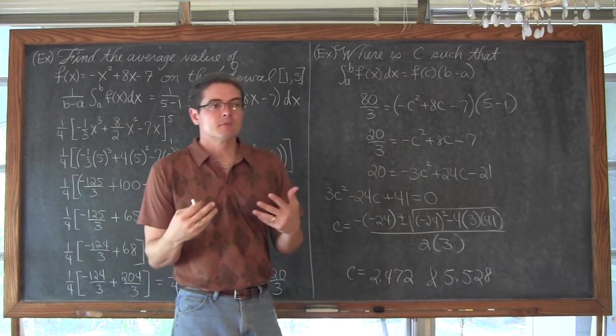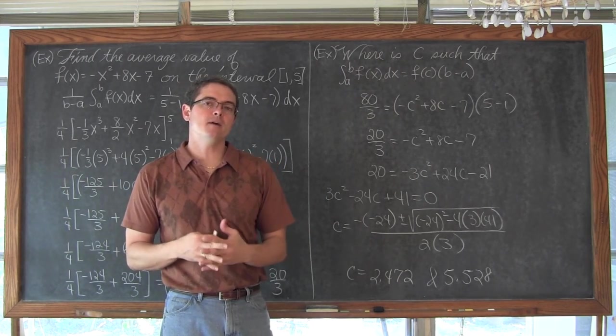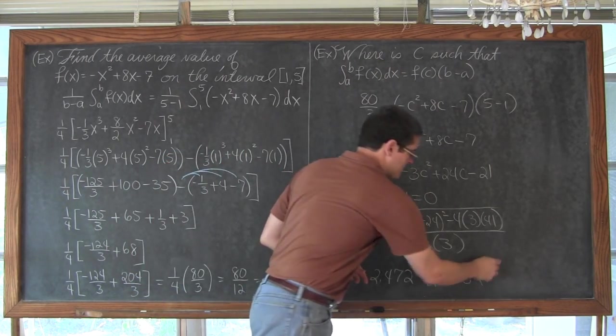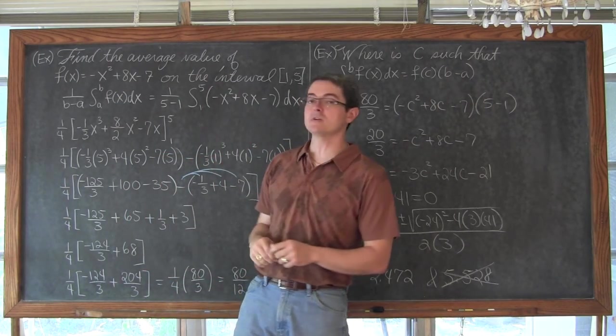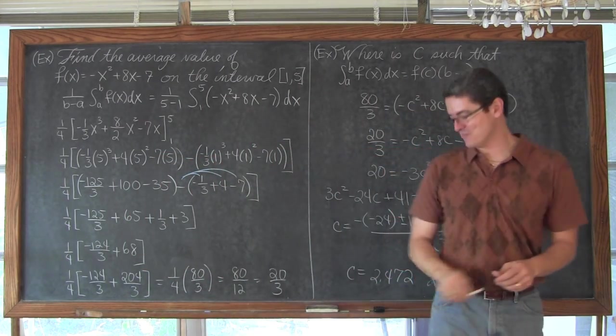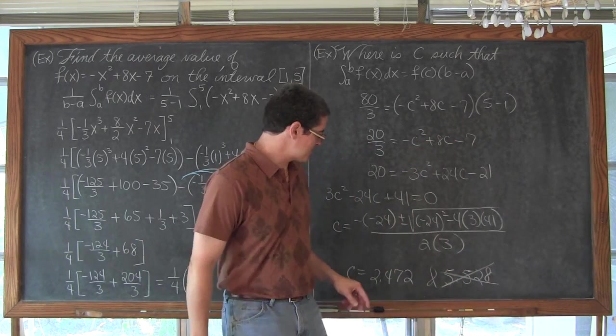So, while it is possible to get two answers, or more than one value of c on that closed interval, my second value of 5.53 basically is not within the closed interval that was asked for in the original problem. So, we did get a unique solution.